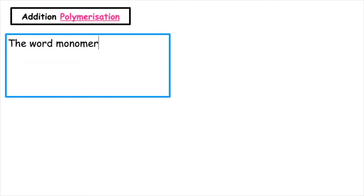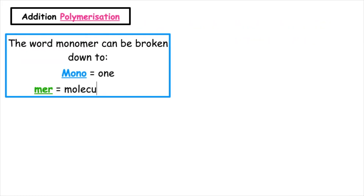The word monomer can be broken down to mono, meaning one, and mer, meaning molecular parts.